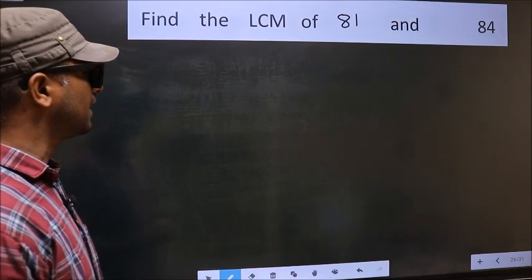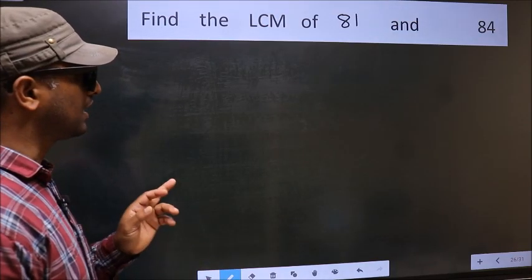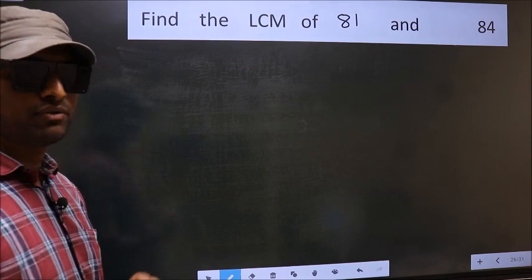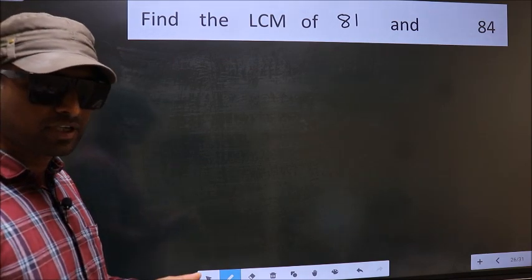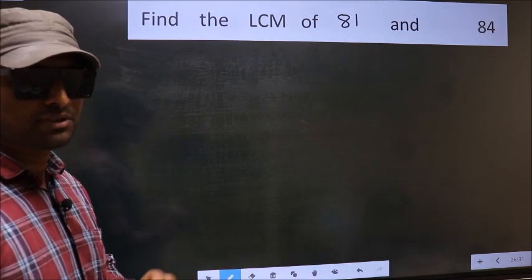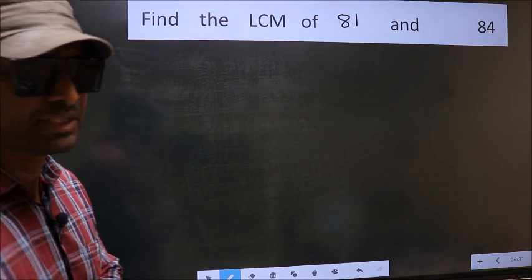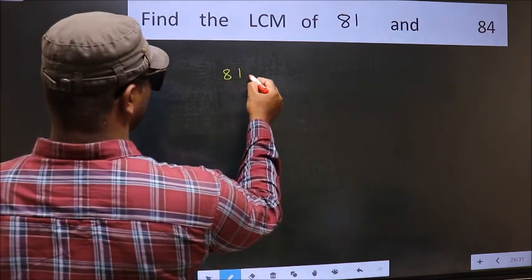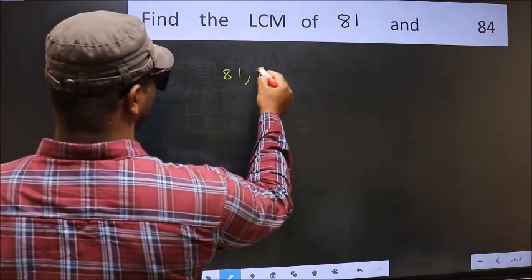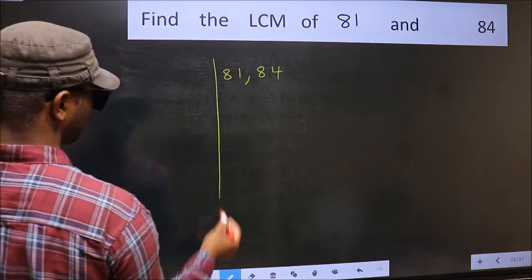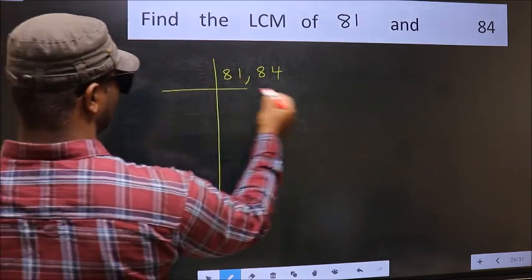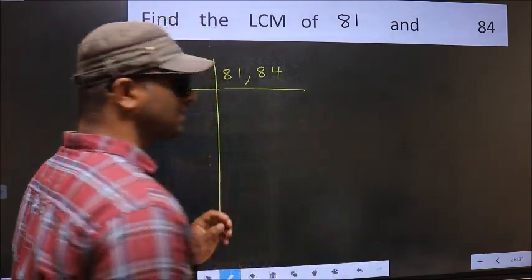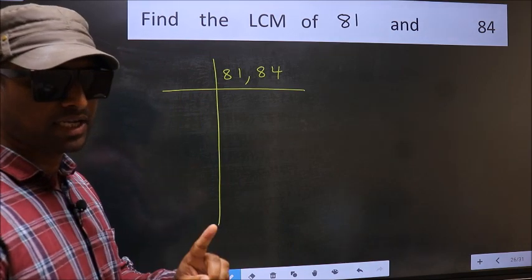Find the LCM of 81 and 84. To find the LCM, we should frame it in this way: write 81 and 84 side by side. This is your step 1.